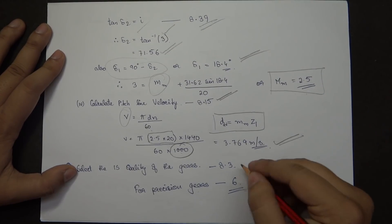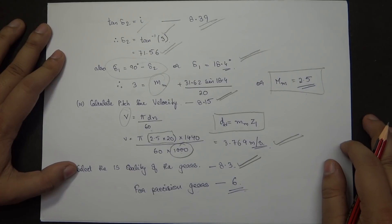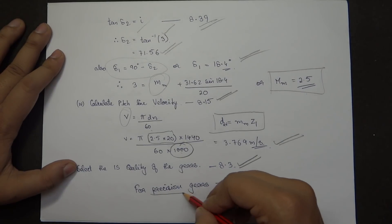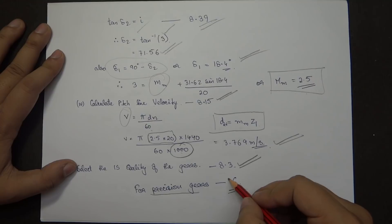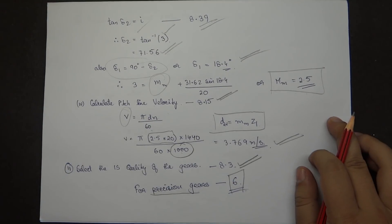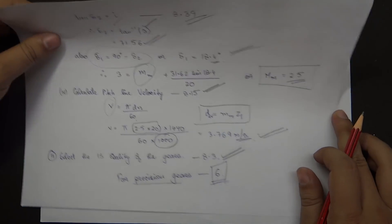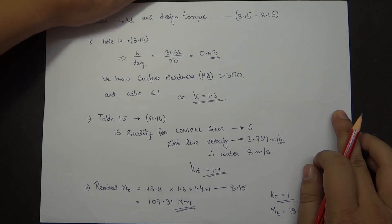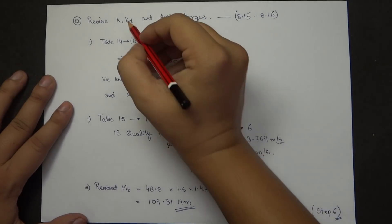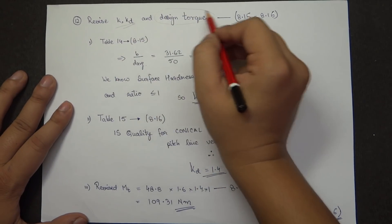The eleventh step is selecting the gear quality. From page 8.3, bevel gears are very precise in nature, so I'll take the highest quality value of 6.